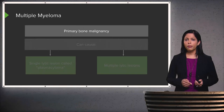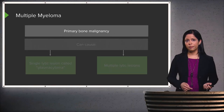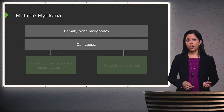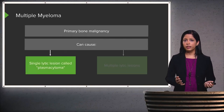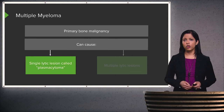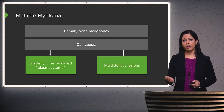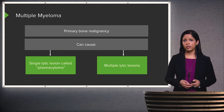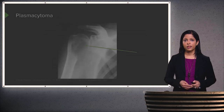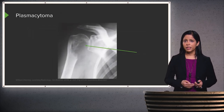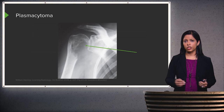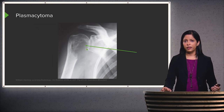Multiple myeloma is a primary bone malignancy. It can cause either a single lytic lesion called a plasmacytoma, or multiple lytic lesions with a punched-out appearance as we just saw. This is an example of a plasmacytoma — a single lucent lesion within the right humeral head.